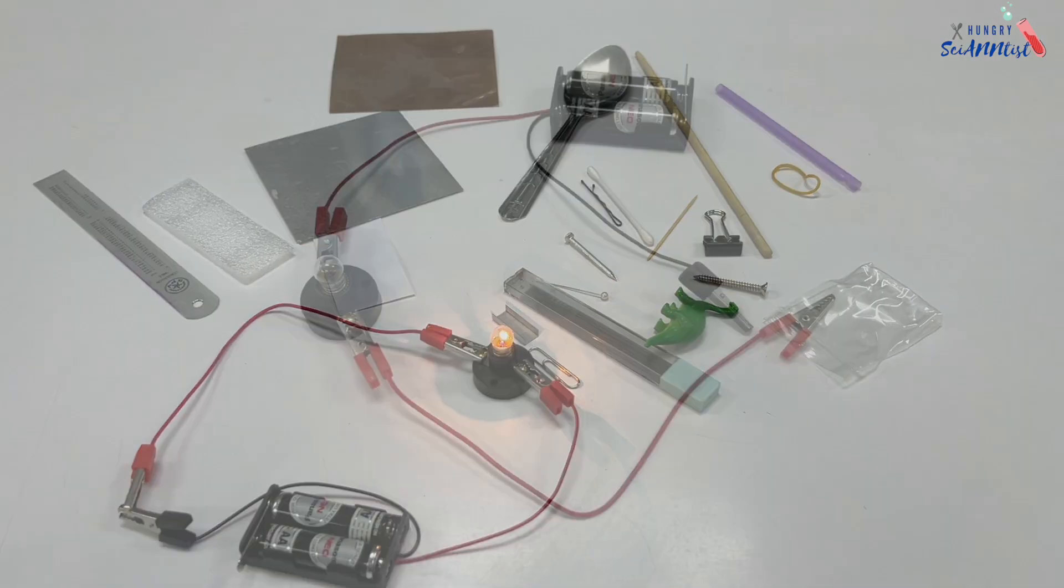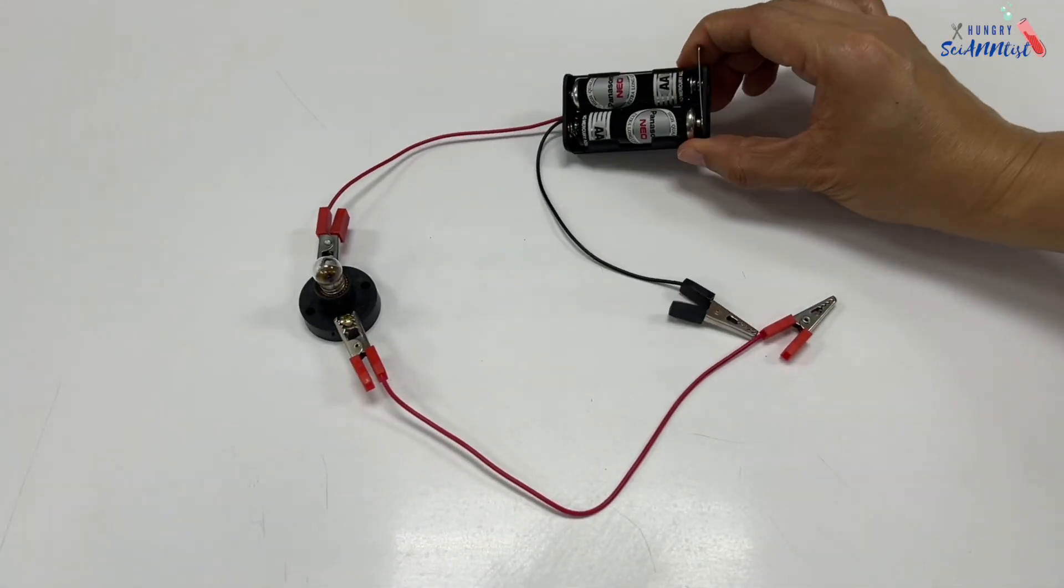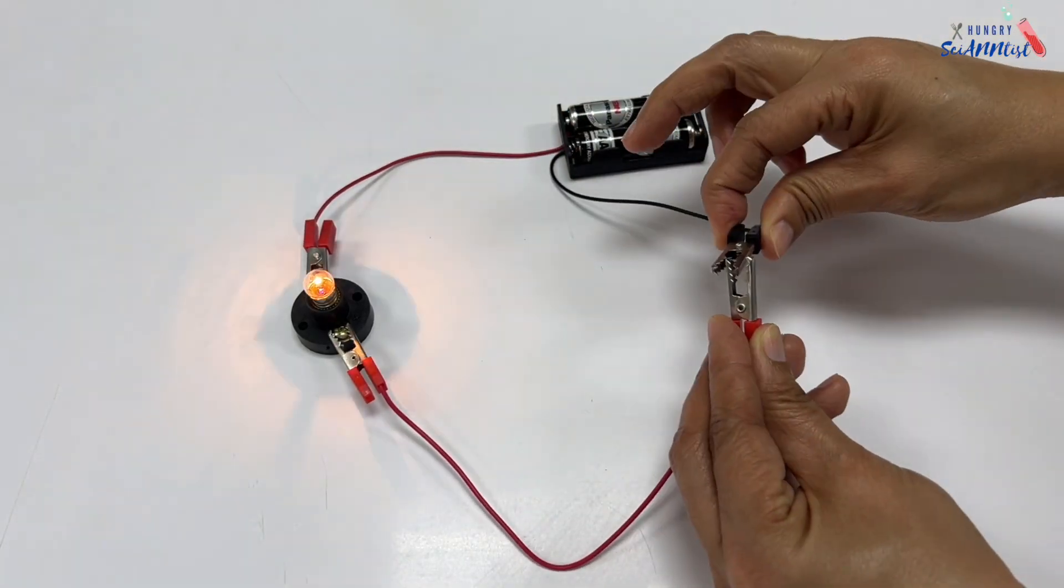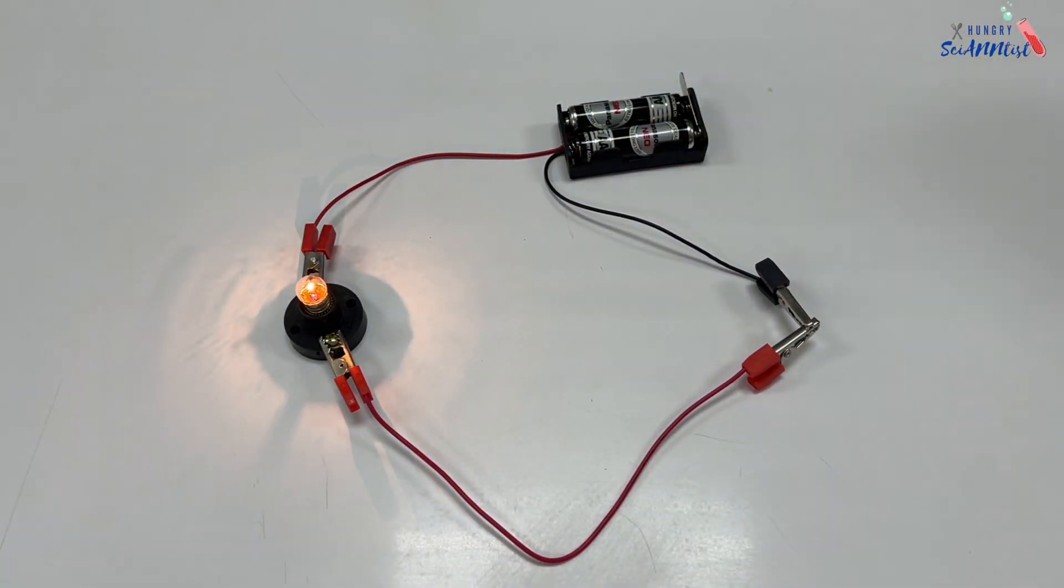So we have here an electric circuit. We have batteries, light bulb, electric wires, and alligator clips.